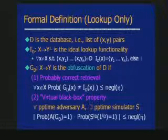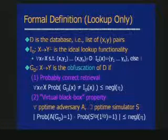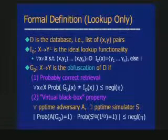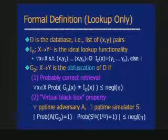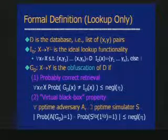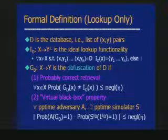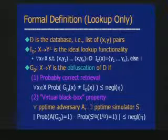The simulator gets a number of queries but doesn't get access to the real database. Anything that the real-world adversary can learn from the real obfuscated database, the simulator can learn by accessing just the ideal functionality. This is saying that with overwhelming probability, there is no more information contained in the obfuscated database than in the ideal functionality.